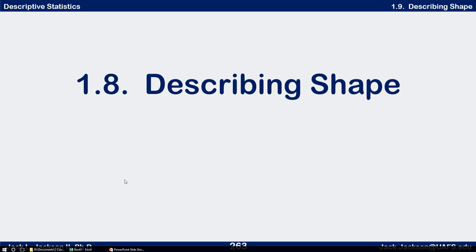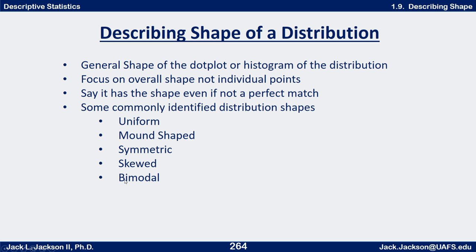In this video we're going to be talking about describing the shape of a distribution. When we're talking about describing the shape of a distribution, be sure that your focus is on the general overall shape and not individual points. We might be looking at the shape of a dot plot or maybe a histogram. We can also look at box and whisker plots to help describe the shape, but usually the words we use are more describing the dot plot or histogram.